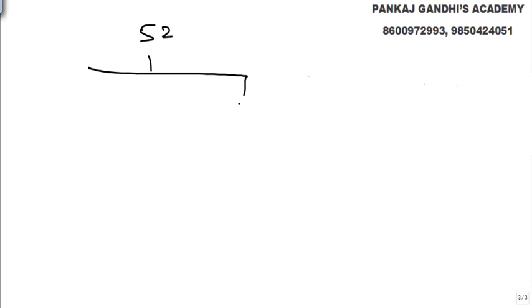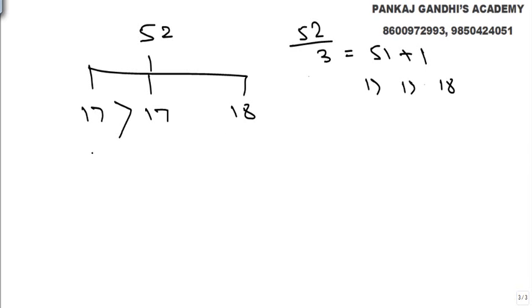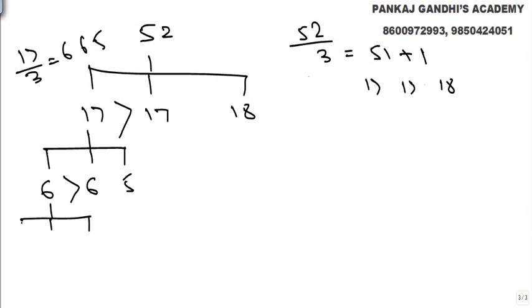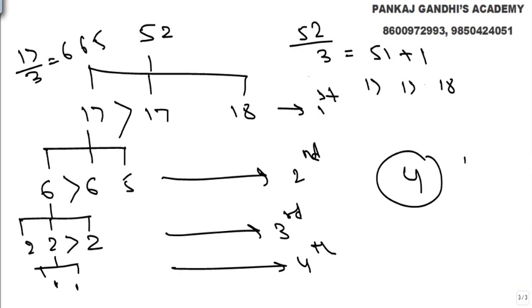Another example: 52 balls. 52 is not divisible by 3; we use 51 + 1, making groups of 17, 17, and 18. Compare 17 and 17 — first use. Say one group of 17 contains the heavier ball: divide 17 into 6, 6, and 5. Compare 6 and 6 — second use. Then divide further into 2, 2, 2 — third use. Then 1 and 1 — fourth use. Total: four times.